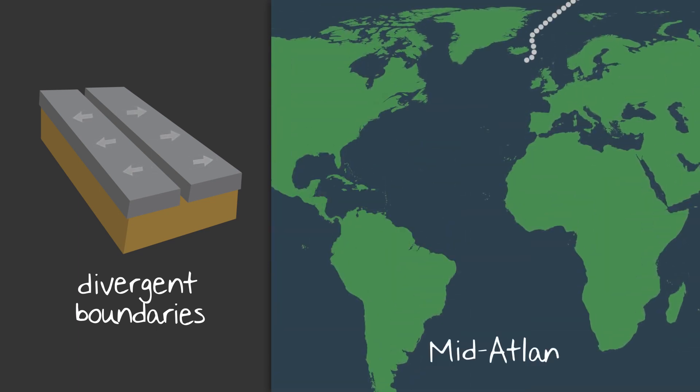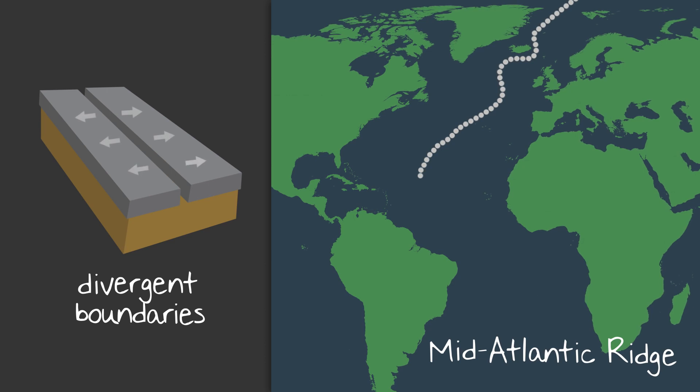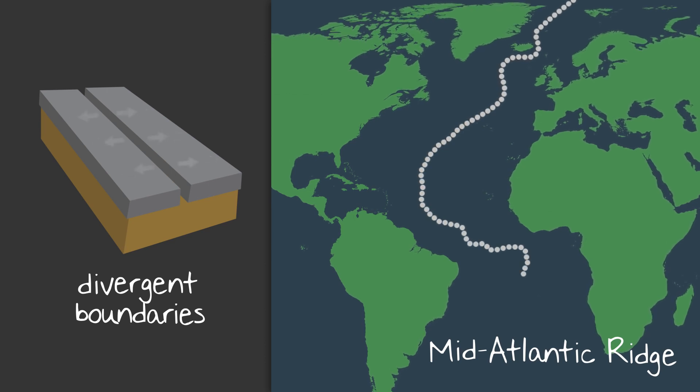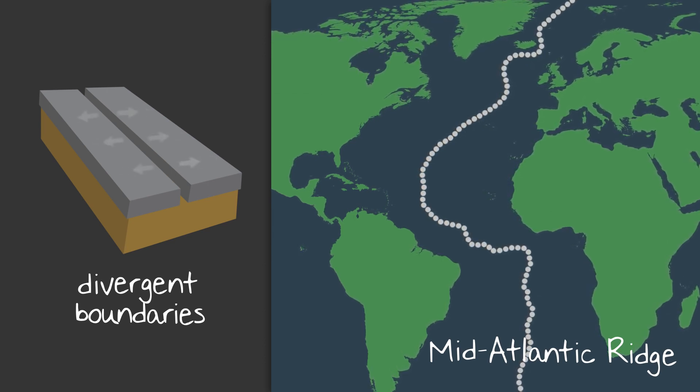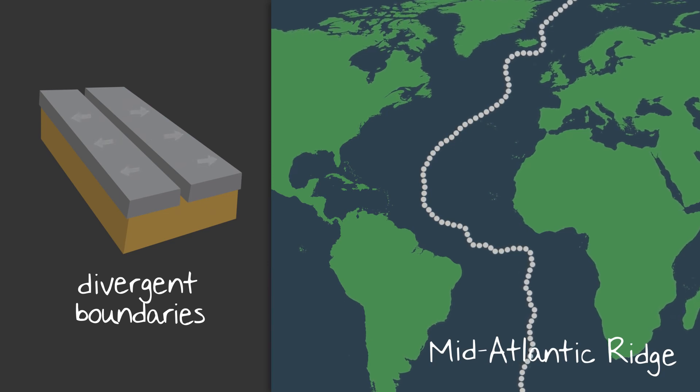The Mid-Atlantic Ridge is an example of where seafloor spreading has occurred. The crust under the ocean pulled apart, allowing magma to fill the space between, creating the tallest and longest mountain chain in the world.